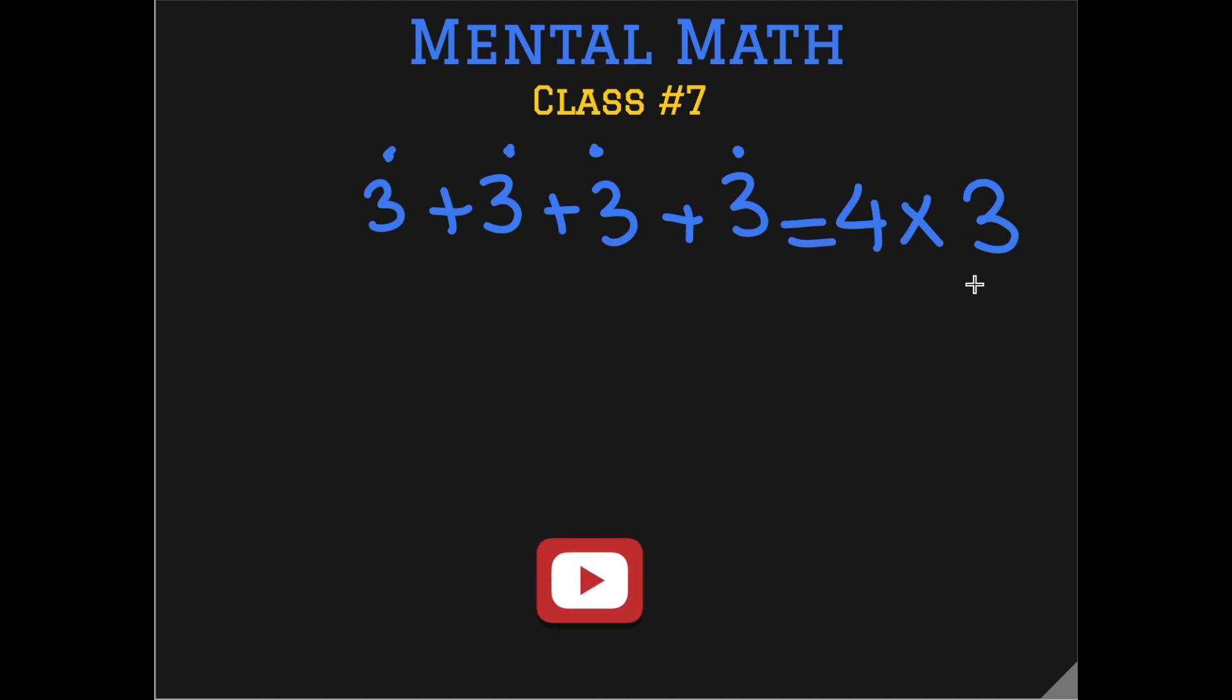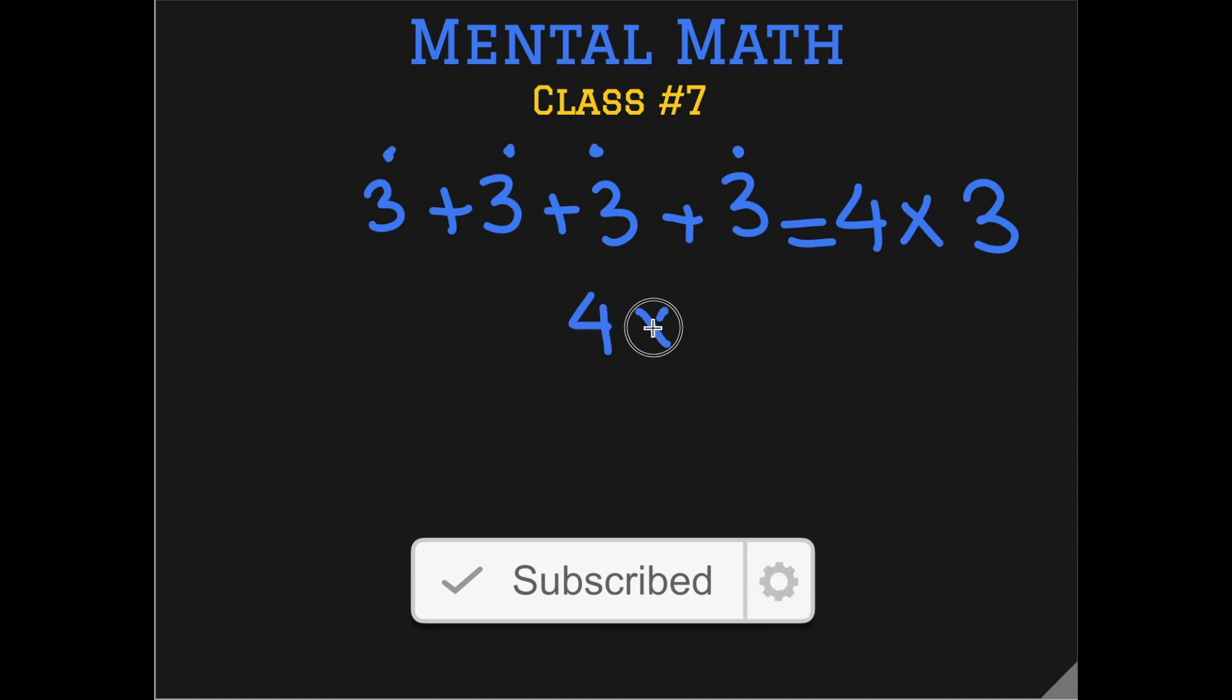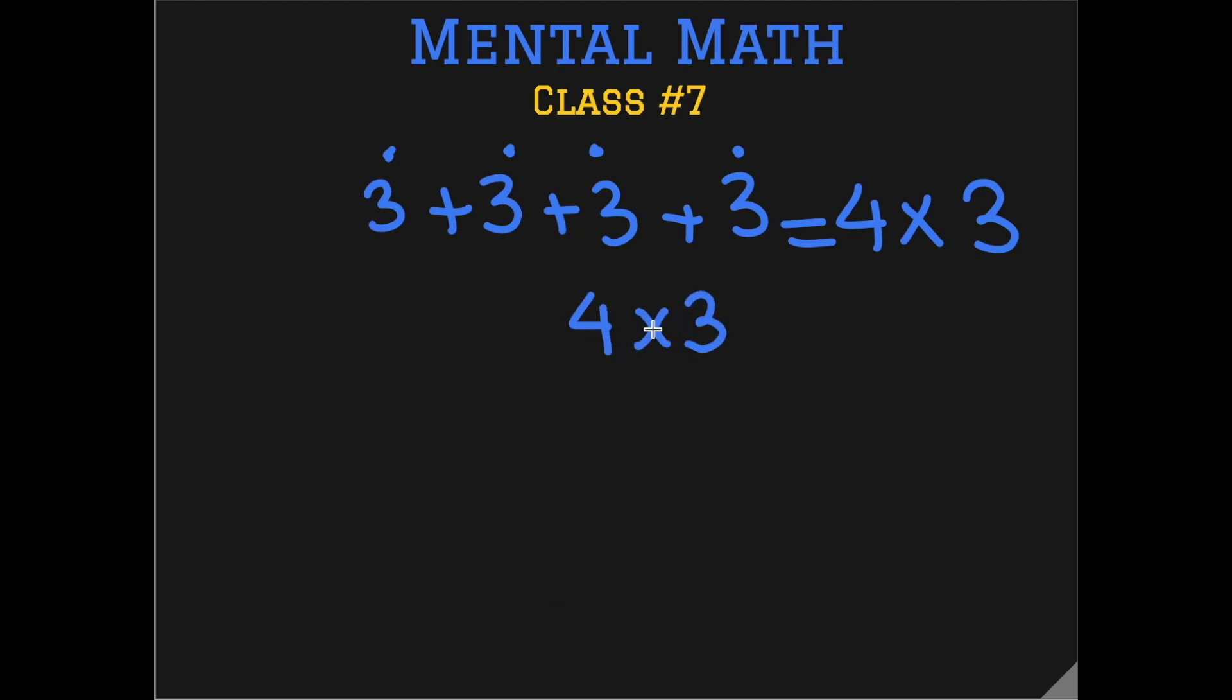The next thing that is taught is that the order doesn't matter when we are writing the multiplication expression. So 4 multiplied by 3 is the same thing as 3 multiplied by 4. We will arrive at the same answer when we solve these expressions and this is how it is taught to children too.